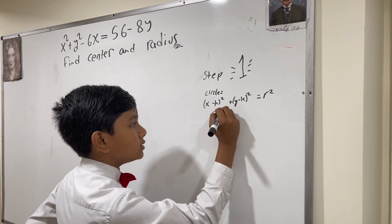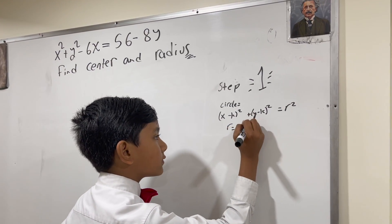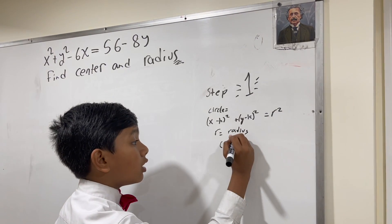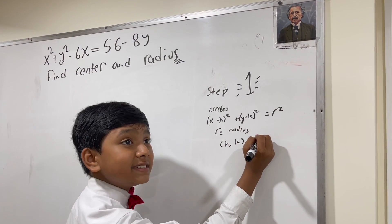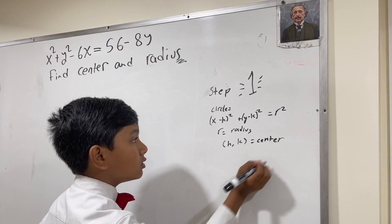So, R is, of course, the magnitude of the radius, and H, K are the coordinates of the center.